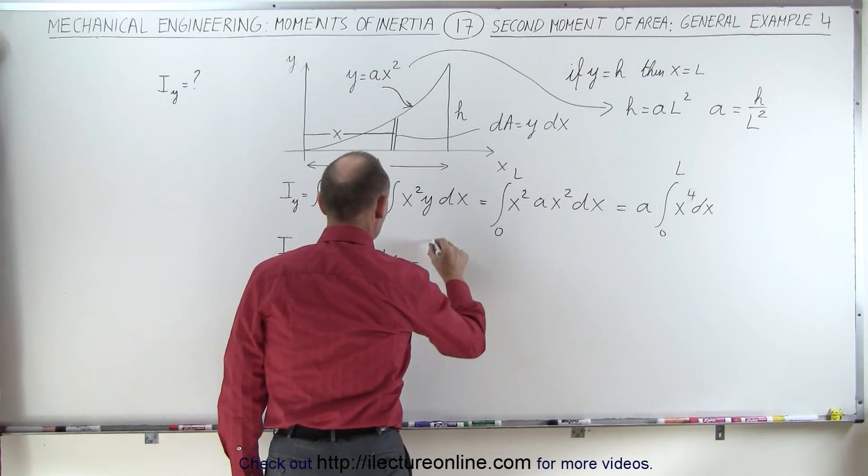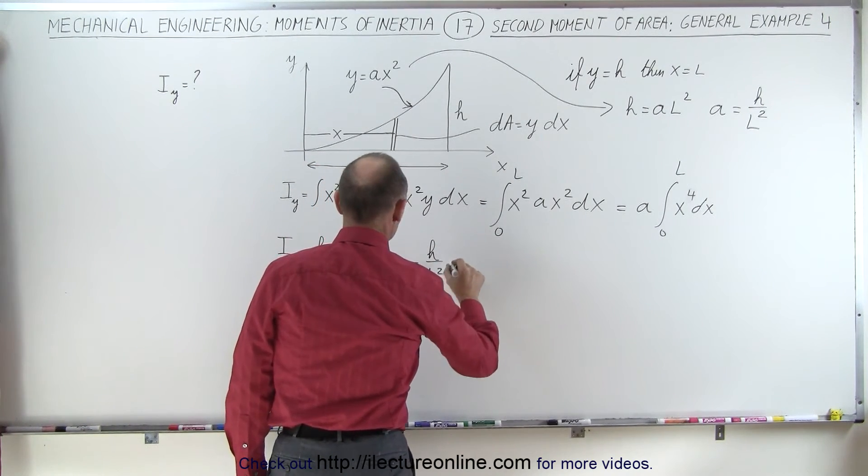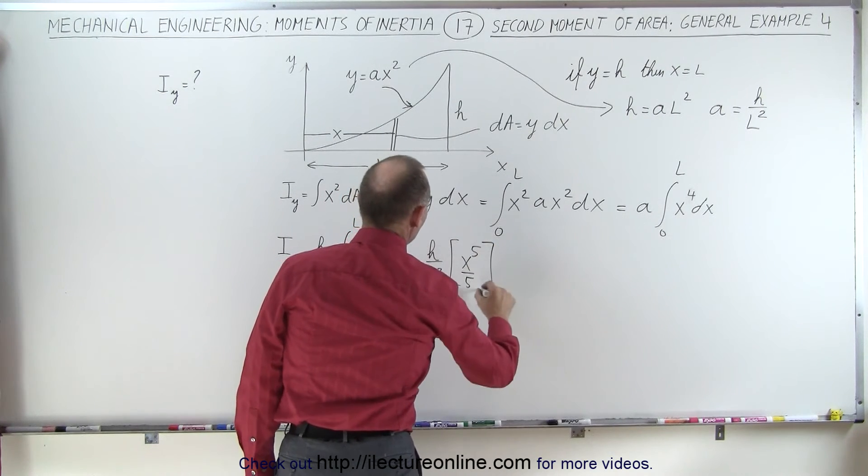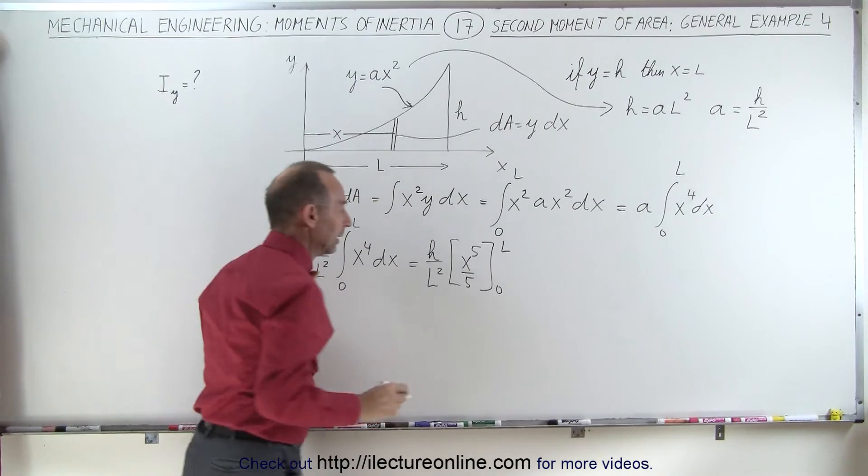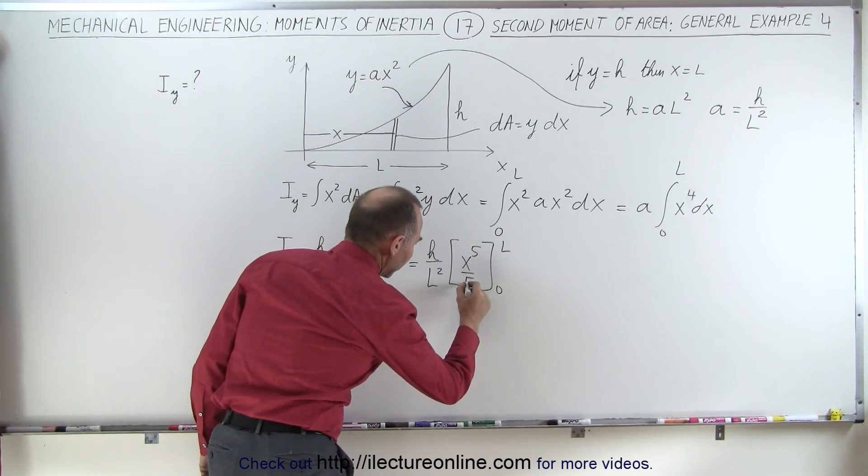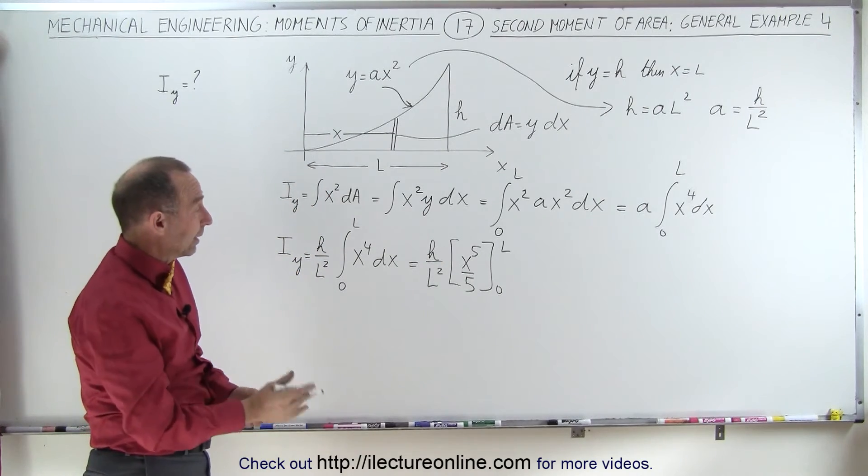That becomes we have H divided by L squared times x to the fifth over 5 evaluated from 0 to L. When we plug in the lower limit we get nothing. Plug in the lower limit we get nothing.